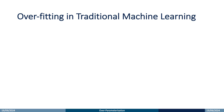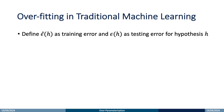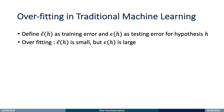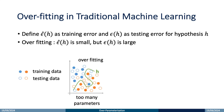We first introduce the cause of overfitting in traditional machine learning. We define epsilon-hat of h as the training error and epsilon of h as the testing error for a given model h. The definition of overfitting is that when a training algorithm reduces epsilon-hat to become very small, but epsilon remains large. Conventionally, overfitting is due to too many parameters in the model.